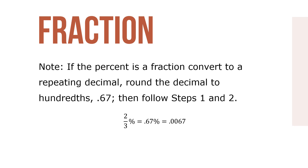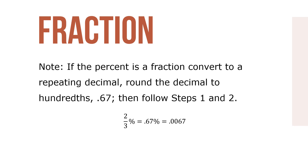To divide a number by 100, move the decimal point two places to the left. Add zeros as needed. Remember, if there's no decimal point, it is understood to be at the right of the digit in the ones place. For instance, 24 equals 24 with a decimal point.